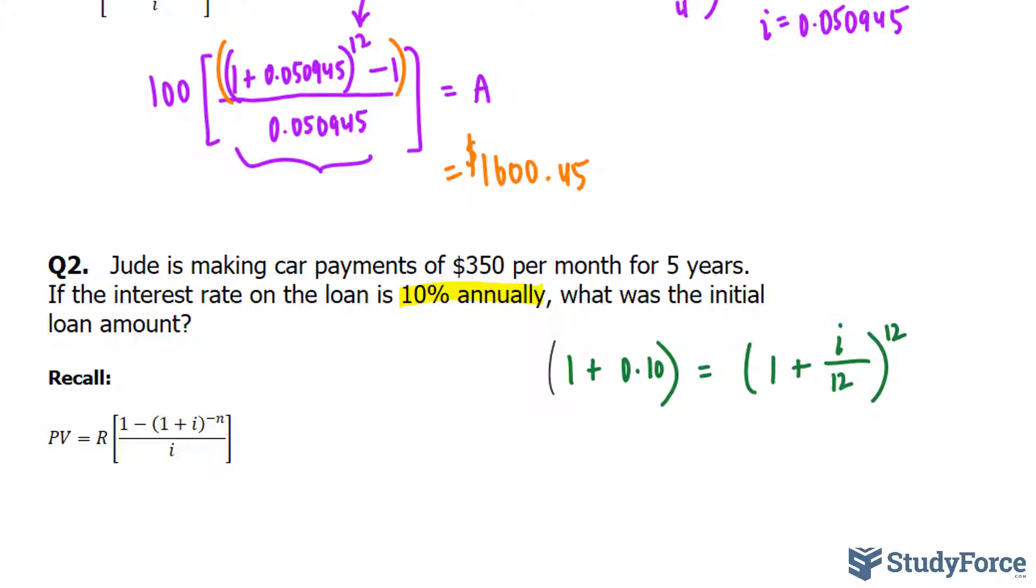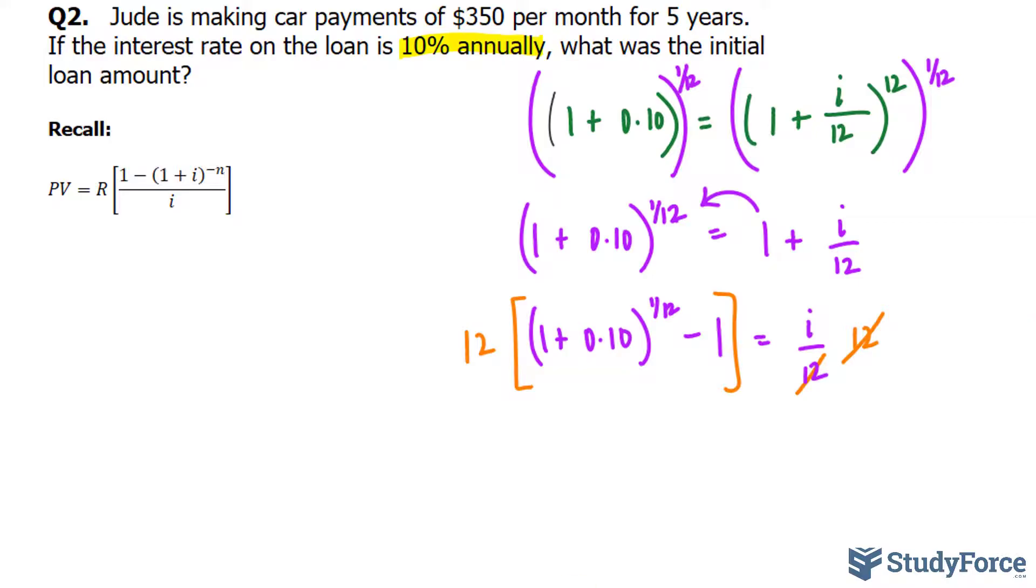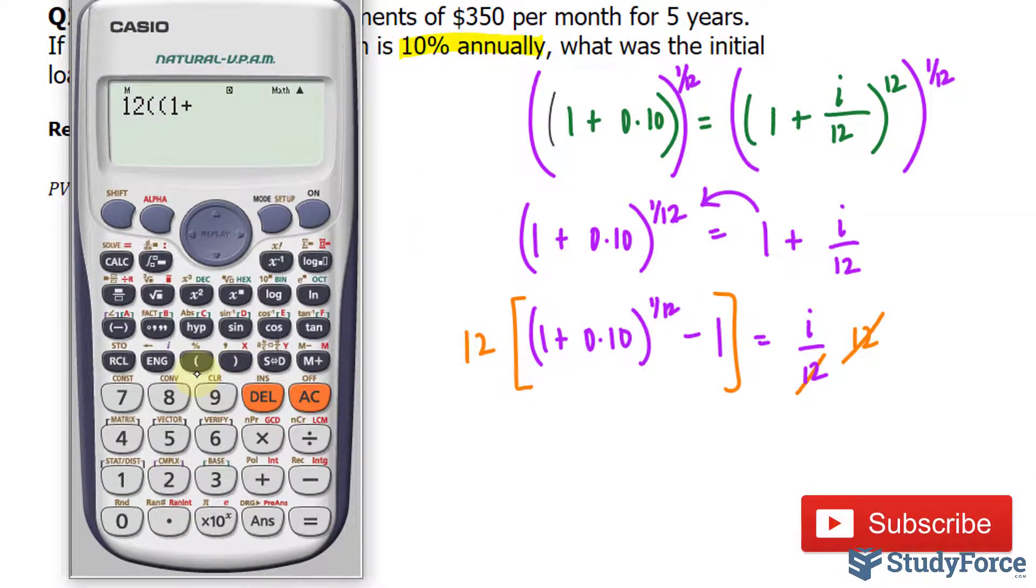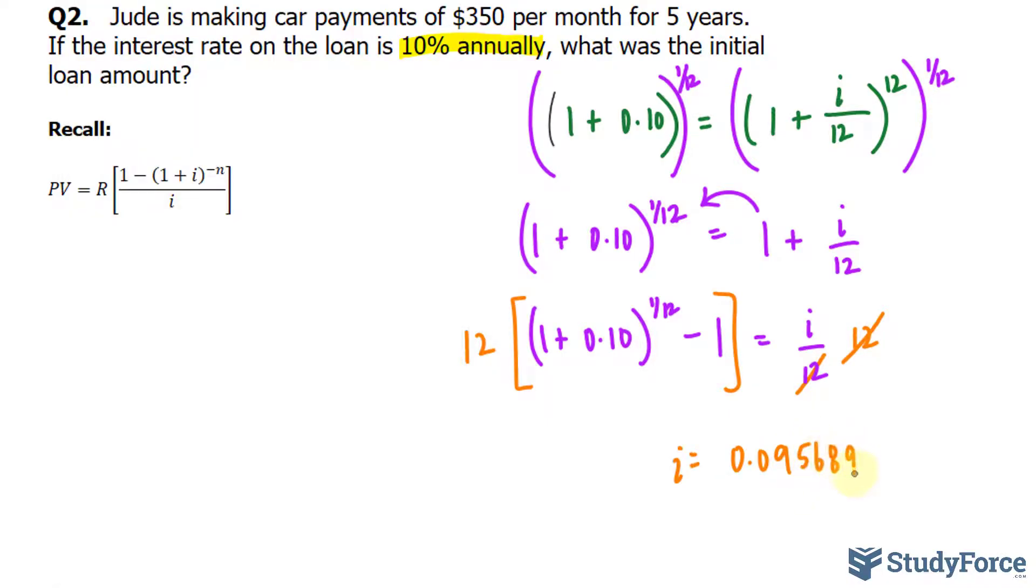To solve for i requires a bit of algebra. First, we have to get rid of this exponent of 12 by raising both sides to an exponent of 1 over 12, or you can take the 12th root of both sides, it's the same thing, and that will get rid of that 12. We'll bring that 1 over and multiply both sides by 12 to get rid of this 12 at the bottom. Once this is done, we end up getting an interest rate that is 0.095689.